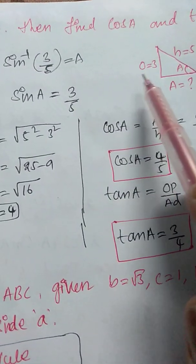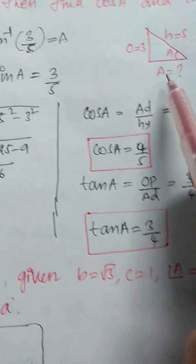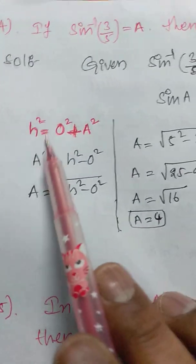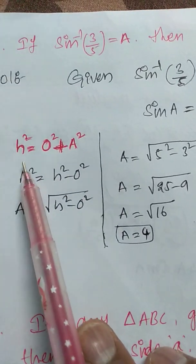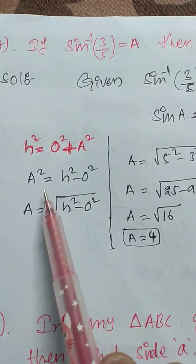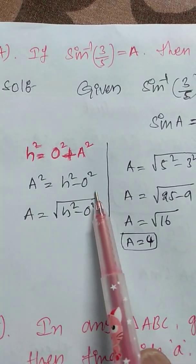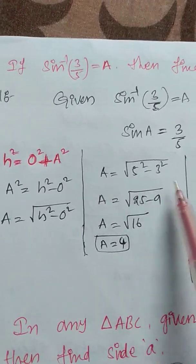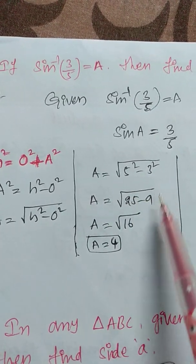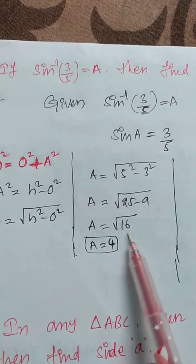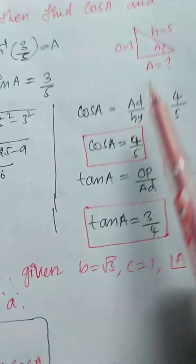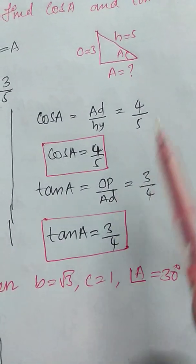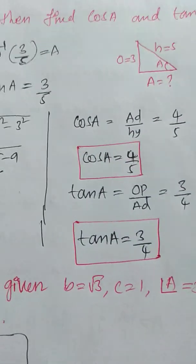Sine A means opposite side by hypotenuse. From the right angle triangle, opposite side is 3 and hypotenuse is 5. By Pythagoras theorem: adjacent side equals root of (hypotenuse squared minus opposite side squared) = root of (25 minus 9) = root of 16 = 4. Therefore, cos A equals adjacent side by hypotenuse = 4/5, and tan A equals opposite side by adjacent side = 3/4.